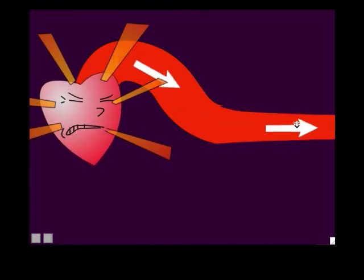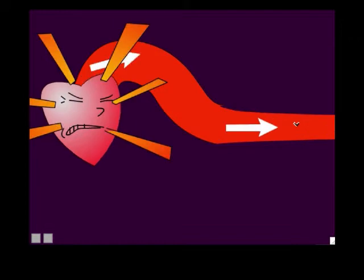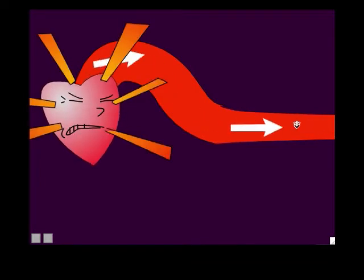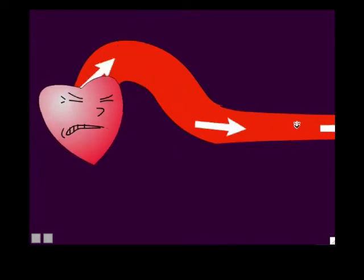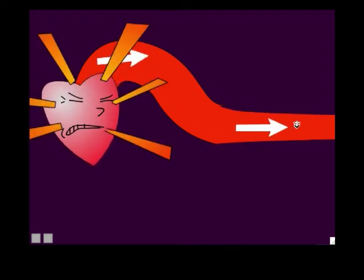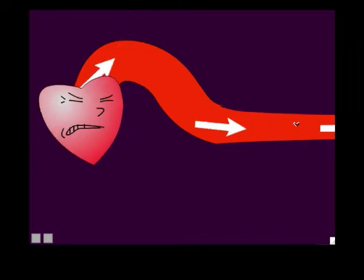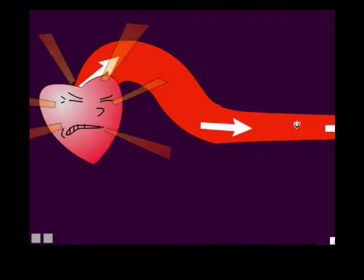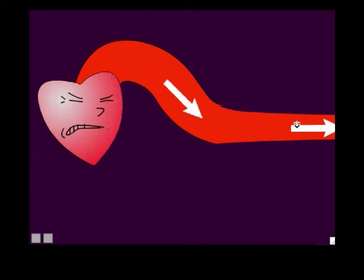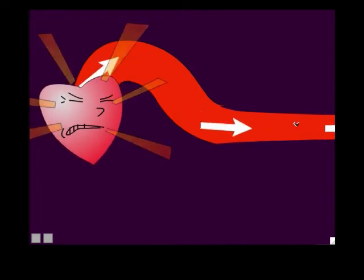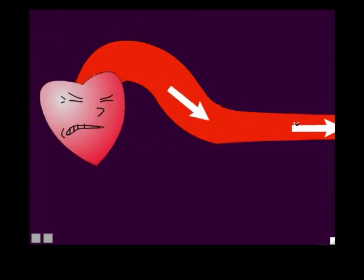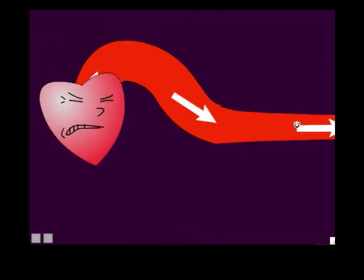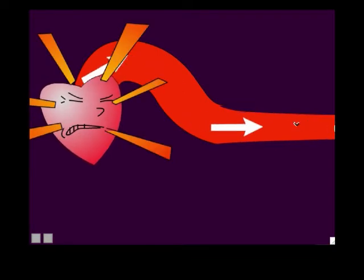Conversely, if that artery relaxed so the lumen got larger, there's less resistance — a larger lumen means smaller peripheral resistance, so the heart does not have to squeeze very hard and blood pressure goes down. Peripheral resistance is the main thing that sets a person's blood pressure. The major thing that sets it is the size of the lumen: smaller lumen equals more peripheral resistance and higher blood pressure; larger lumen equals less peripheral resistance and lower blood pressure.